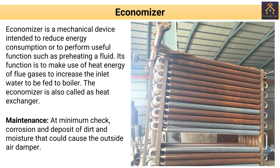The next part of the thermal power plant is the economizer. The economizer is a mechanical device intended to reduce energy consumption or to perform useful functions such as preheating a fluid. Its function is to make use of heat energy from flue gases to increase the inlet water temperature to be fed to the boiler. The economizer is also called a heat exchanger. The maintenance of the economizer includes checking for corrosion and deposits of dirt and moisture at minimum intervals.